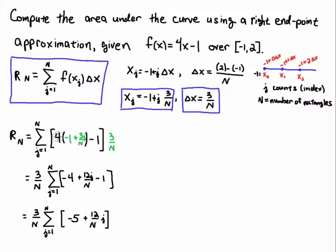Now I'll distribute the four. Four times minus one is minus four, and four times three j over n is twelve j over n, and then I have a minus one. Minus four minus one is minus five, so we get minus five plus twelve j over n, with everything else coming along for the ride.